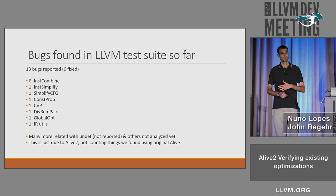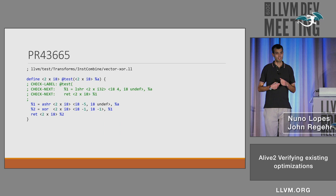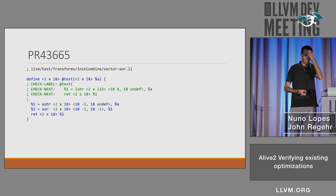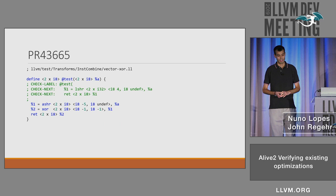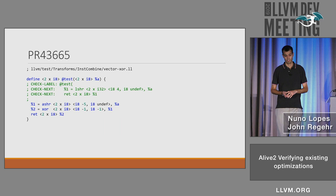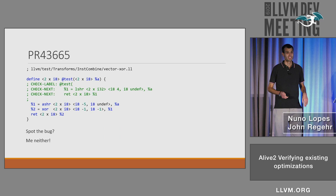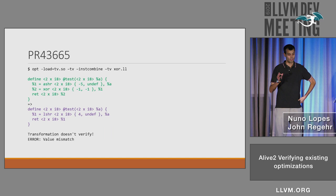Many of these bugs are related to vectors, because the original Alive didn't support vectors, and now we're unleashing verification of vector optimizations and finding these bugs. Let me give you a quick example of a bug we found recently. I've simplified it to have a vector of two elements. This is a unit test that is incorrect — the optimization is incorrect but we were checking for the wrong result as well. It's trying to transform an arithmetic shift right plus XOR with a logical shift. I don't know if you spot the bug, but Alive can do this work for us.